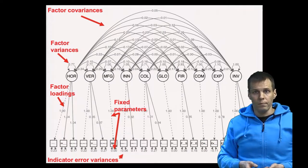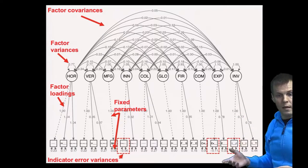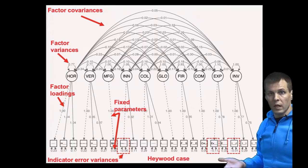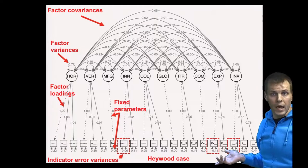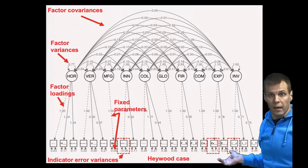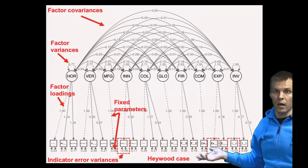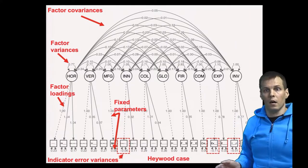There are some interesting things to note. We can see that some error variances are negative — this is a Heywood case, and I have another video explaining what a Heywood case is and why it occurs. These negative values are close to zero, so we can conclude that these indicators are just highly reliable and the error variance is actually close to zero but positive. Because of sampling error, we get small negative values, which we don't really worry about.